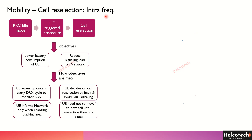This means there is only one single carrier available in the network, and the user is moving between one cell to another cell, but the carrier frequency remains the same.